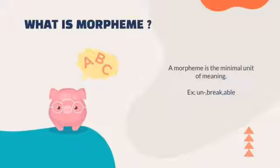What is morpheme? Morpheme is a concept that started from morphology, while morphology itself is a branch of linguistics that studies basic words and affixes. So morpheme is related to those two themes. Morpheme is the smallest grammatical unit that has meaning and cannot be further divided into smaller language forms.